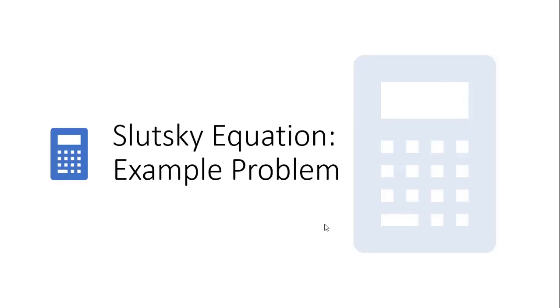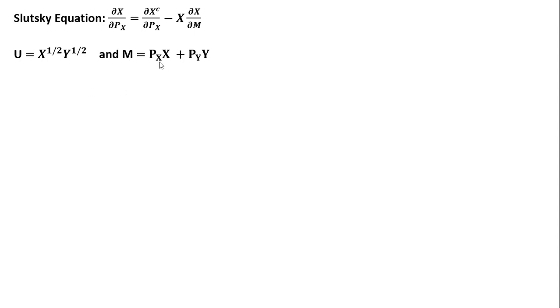This is the second video on the Slutsky equation, and we'll now do an example problem. Here's the Slutsky equation derived in an earlier video. We're going to use this Cobb-Douglas utility function with goods x and y, where the consumer has income m facing the price of good x and the price of good y.